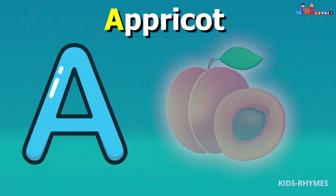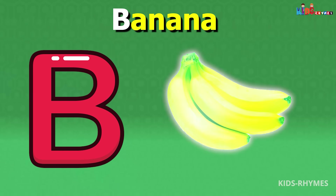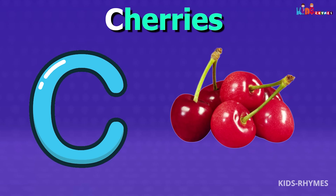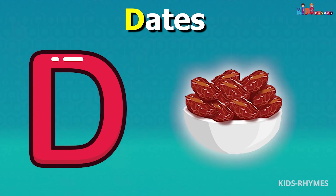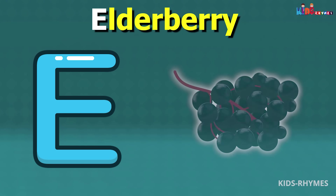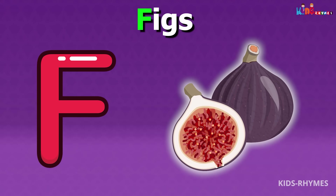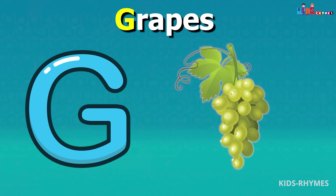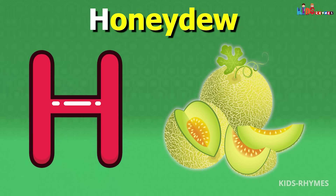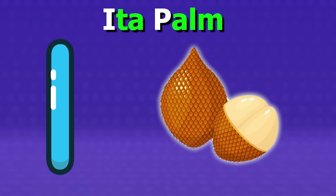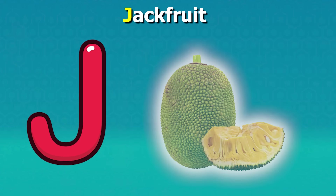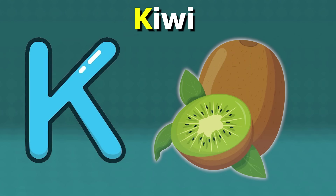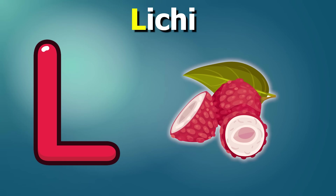A for apricots, B for bananas, C for cherries, D for dates, E for elderberries, F for figs, G for grapes, H for honeydew, I for Indian plum, J for jackfruit, K for kiwi, L for lychee.